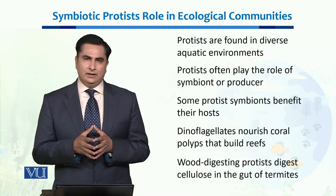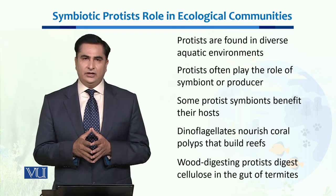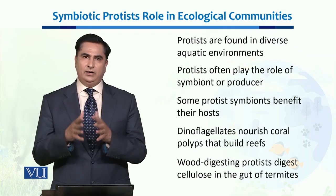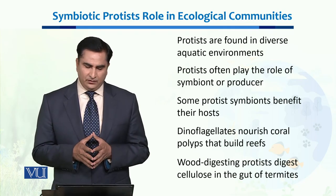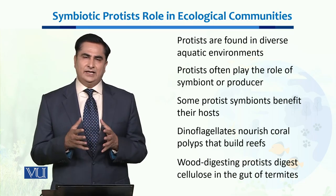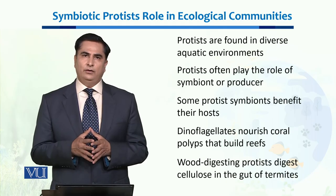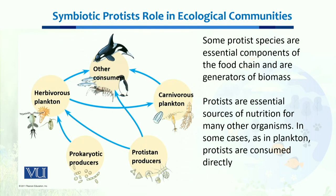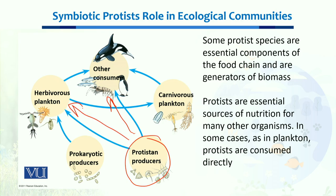For example, some dinoflagellates nourish coral polyps that build coral reefs, while some wood-digesting protists digest cellulose as they live in the guts of different termites. In the aquatic environment, as you can see in this chart, these protist producers are an important source of food chain for different organisms present in aquatic ecosystems.